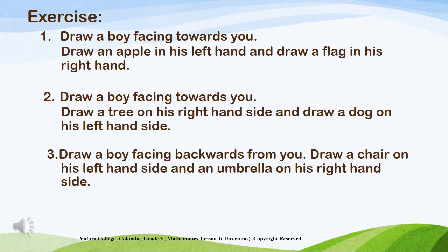Now we are going to do some exercises using the knowledge of directions. Exercise 1: Draw a boy turning towards you. Draw an apple in his left hand and draw a flag in his right hand. Exercise 2: Draw a boy turning towards you. Draw a tree on his right hand side and draw a dog on his left hand side.